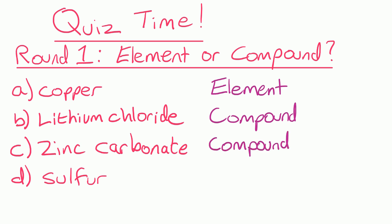Zinc carbonate is also a compound. This time it's made from three things: zinc, carbon, and oxygen, because it ends in 'ate'. And sulfur would be an element. So well done if you got all of those correct.